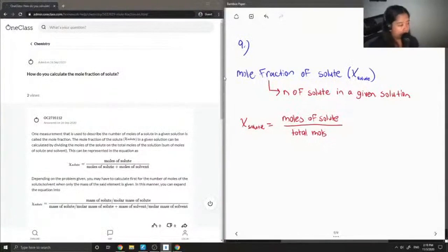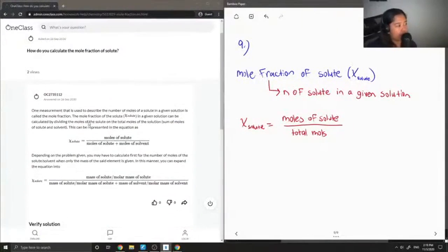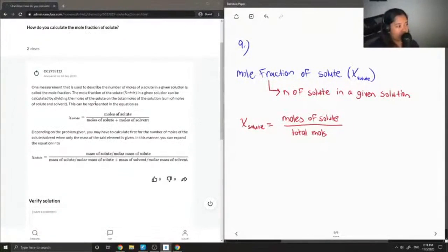So see what our junior tutor said. One measurement that is used to describe the number of moles of a solute in a given solution is called the mole fraction. The mole fraction of the solute X in a given solution can be calculated by dividing the moles of the solute by the total moles of the solution, so the sum of the moles of the solute plus solvent.